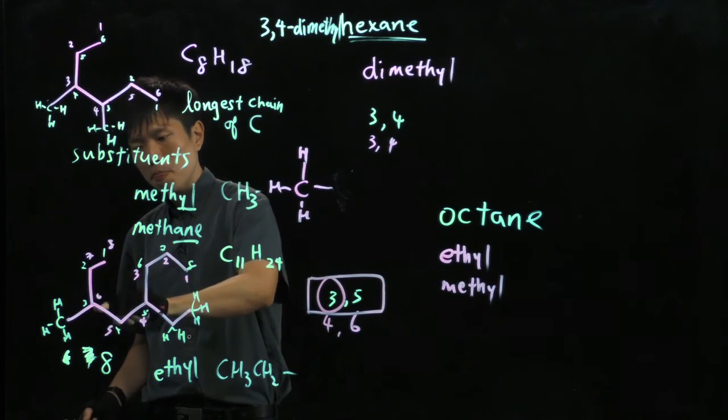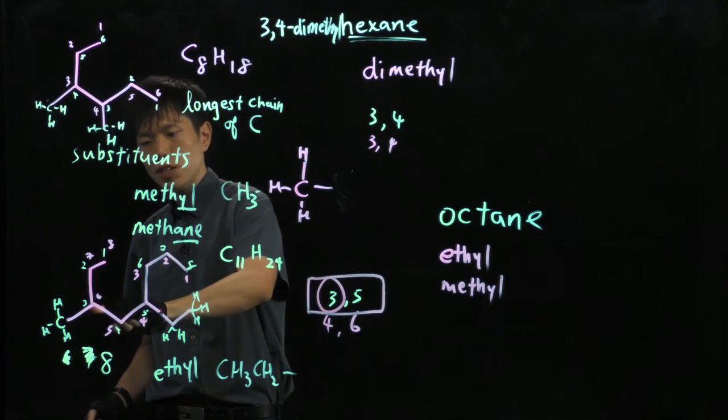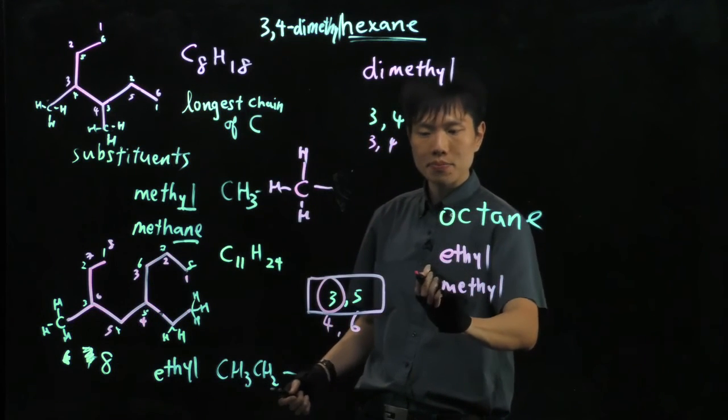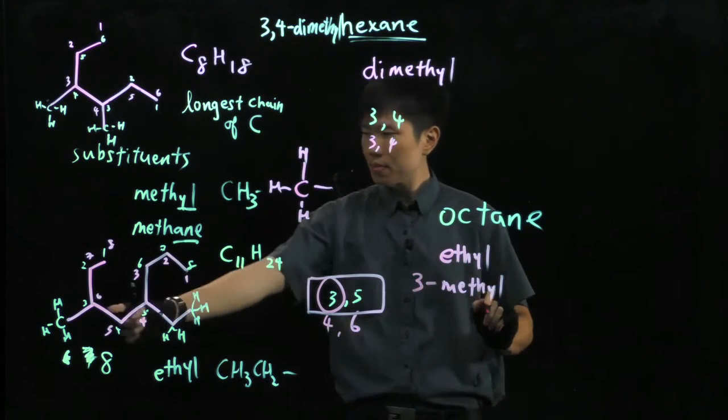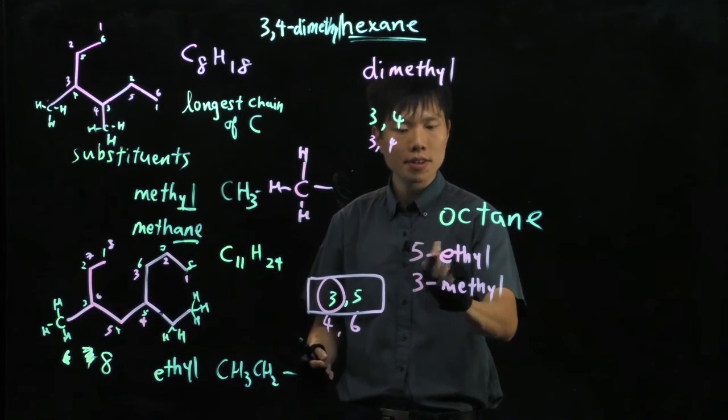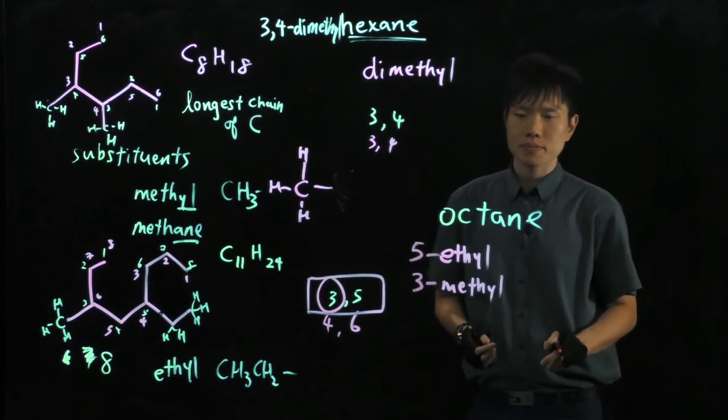So according to this, the first substituent is at the third carbon and that's the methyl group. So in front of the methyl group, we add 3. Fifth carbon has the ethyl group. So it's 5-hyphen-ethyl.